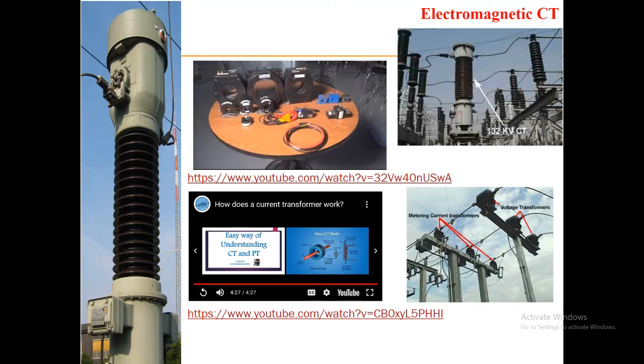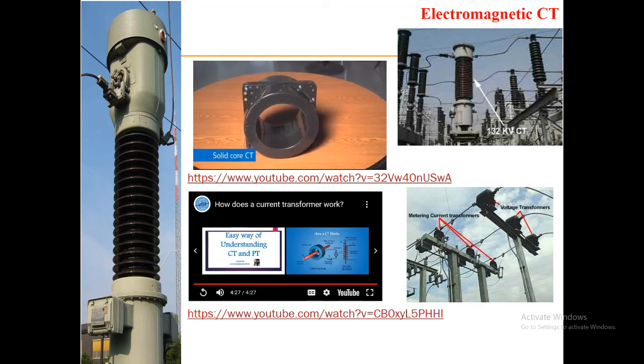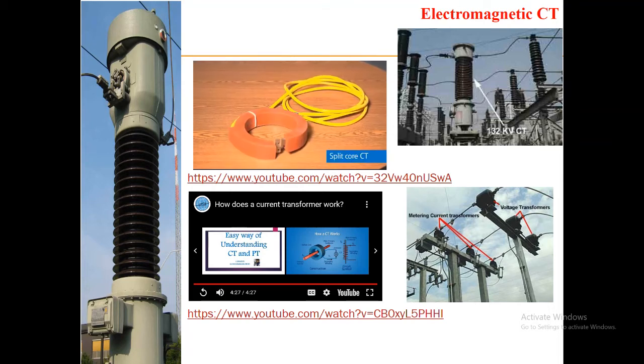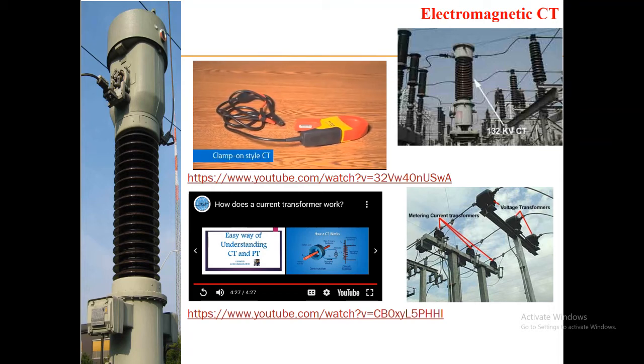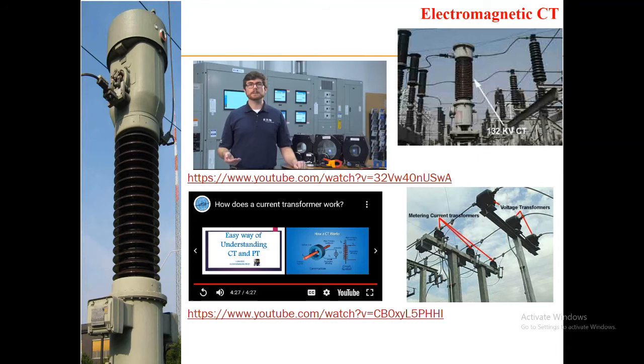Current transformers are primarily used for metering and protection applications and come in various sizes, shapes, and ratings. CTs can be solid core, split core, or clamp-on styles for both low voltage and medium voltage applications.